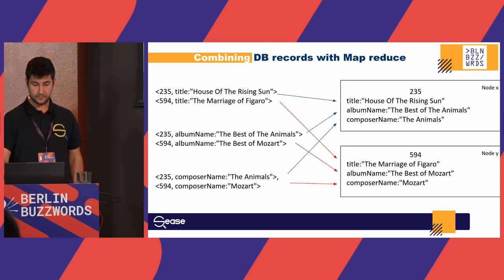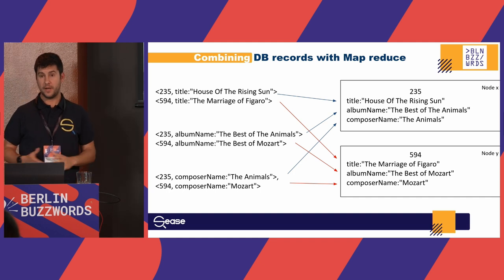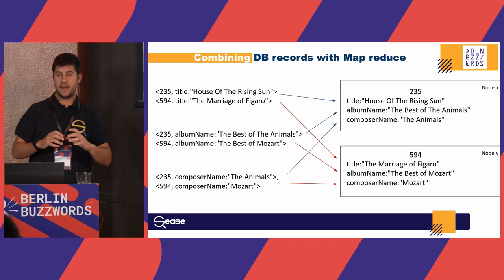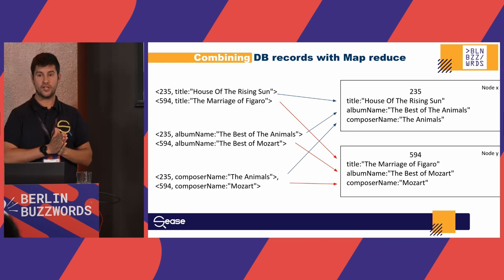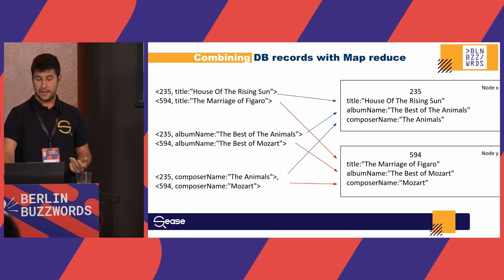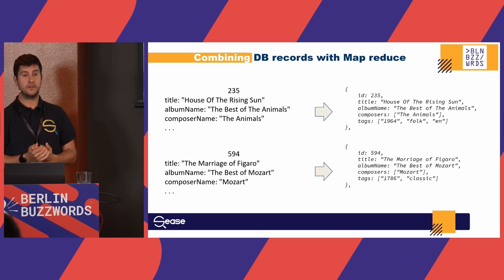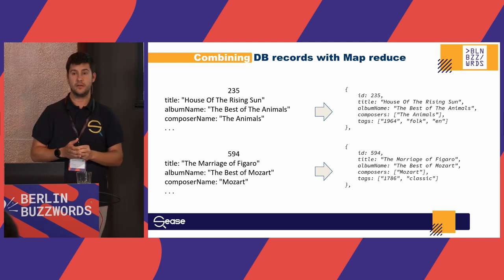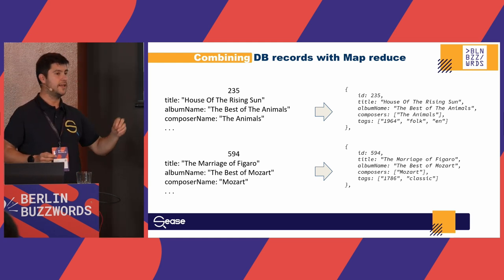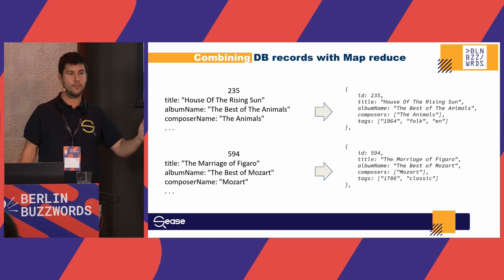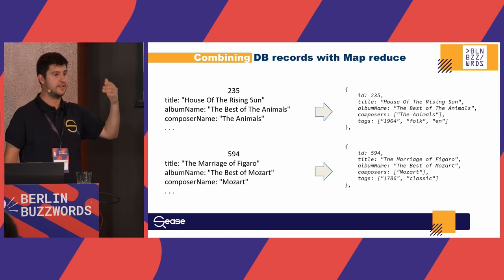The shuffle, implemented by the framework, generates a data structure — one for each song ID — where we have all information about that song ID stored in a structured file or in memory. This makes the reducer very simple to implement, because when I create my document I don't need to search across tables to find where each attribute is stored — everything is in the same file, the same data structure in memory.